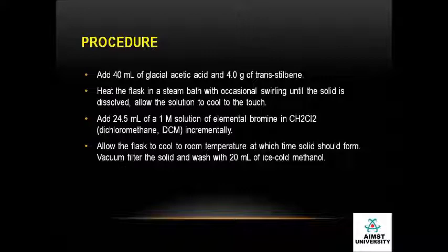Now let's see the detailed procedure for the bromination of trans-stilbene using the conventional technique. In a round-bottom flask, take glacial acetic acid and trans-stilbene. Heat the flask in a steam bath with occasional swirling until the solid is dissolved. You can also use a glass rod to stir if necessary. After dissolving, allow the solution to cool to the touch, then add one molar elemental bromine in dichloromethane incrementally, adding a few ml at a time and swirling gently between each addition.